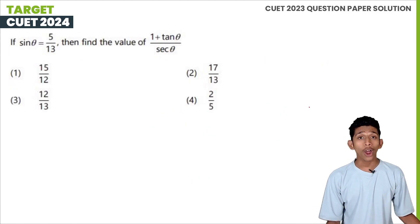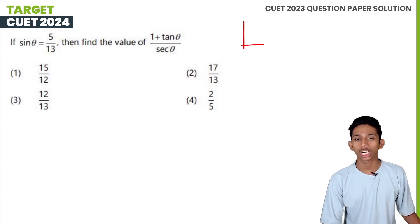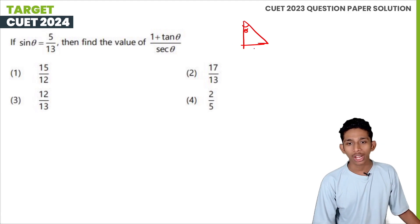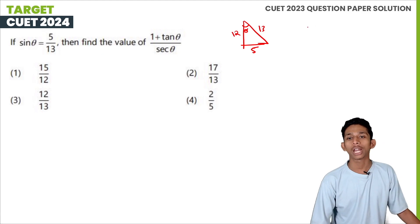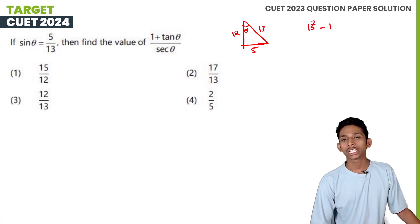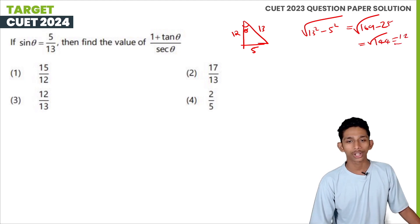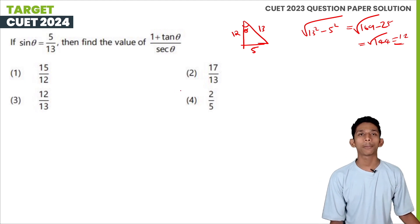If sin θ = 5/13, and sin θ = opposite divided by hypotenuse, then the opposite side is 5 and the hypotenuse is 13. The adjacent side equals √(13² − 5²) = √(169 − 25) = √144 = 12. Now we can find the value of (1 + tan θ) / sec θ.